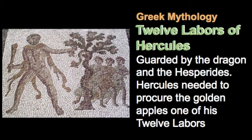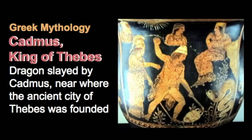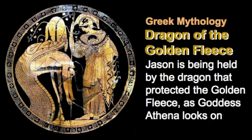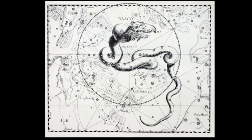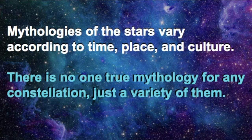Hercules is in fact situated next to Draco in the sky. Another tale is that of Cadmus, the king and founder of Thebes, who slayed a dragon that killed some of his men as they were looking for sources of water. One final tale includes the dragon in the story of Jason and the Argonauts in the search for the golden fleece — depicted in an artwork showing Jason being regurgitated by the serpent that guards the golden fleece, with Athena standing beside him. There are a variety of legends about Draco, and it's easy to see why many ancient cultures saw a snake, sea serpent, or dragon winding its way around the sky. Remember that the mythologies of the stars vary according to time, place, and culture — there is no one true mythology for any constellation, just a variety of them.